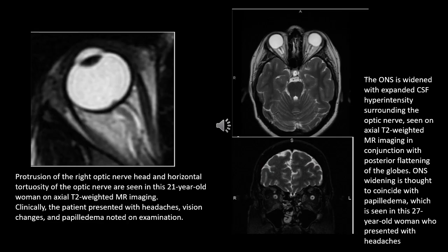The first image is an MRI axial T2-weighted image of a 21-year-old female patient with complaints of headache, in which horizontal tortuosity of the optic nerve is identified. Clinically, the patient presented with headache, vision changes, and papilloedema on examination. On the right are MR axial and coronal T2-weighted brain images showing both optic nerve sheaths distended with CSF fluid signal intensity. On the coronal MR T2-weighted image, optic nerve sheath distension can be clearly identified.